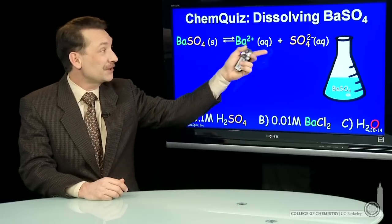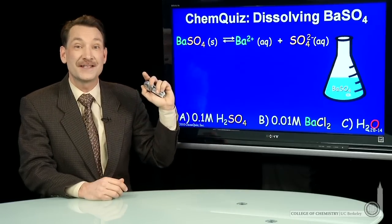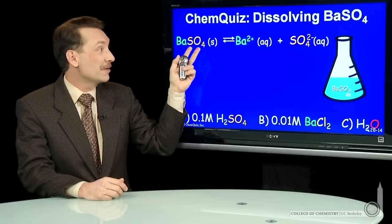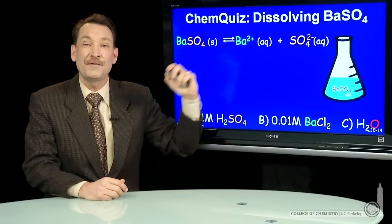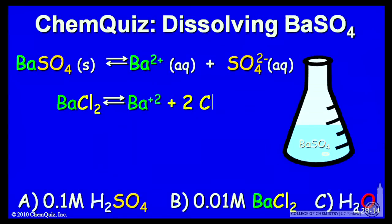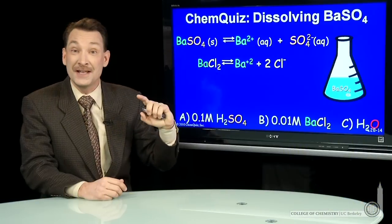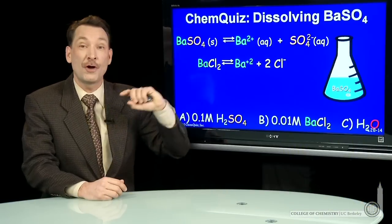Well, if you look at the reaction for barium sulfate solid dissolving in water, barium sulfate forms barium ions and sulfate ions. So if I were to add, say, a barium chloride solution, barium chloride is a very soluble salt. So that breaks down 100% essentially into barium ions and chloride ions.